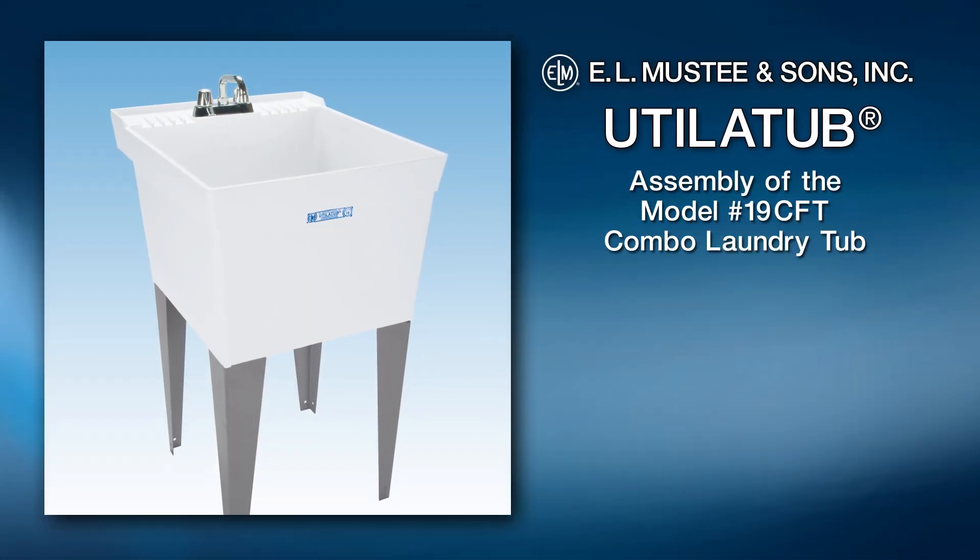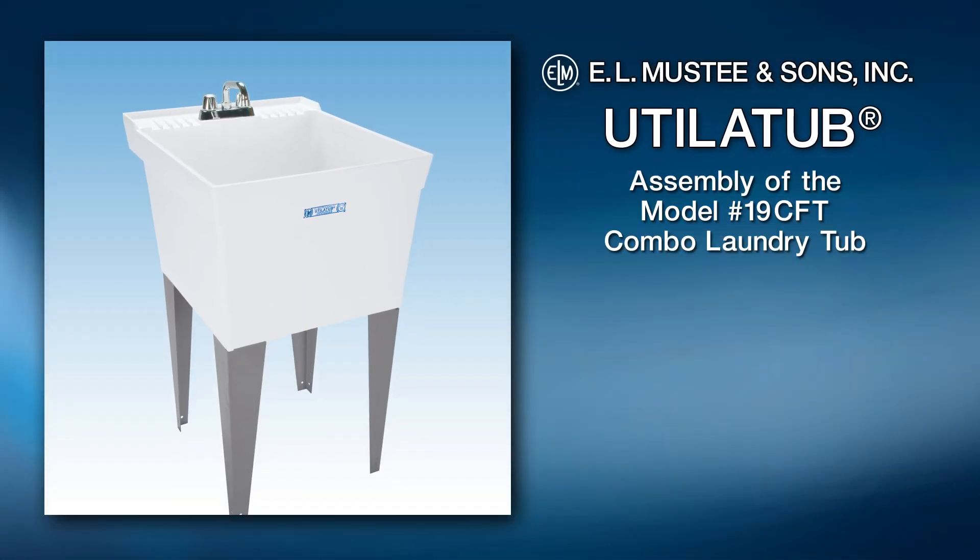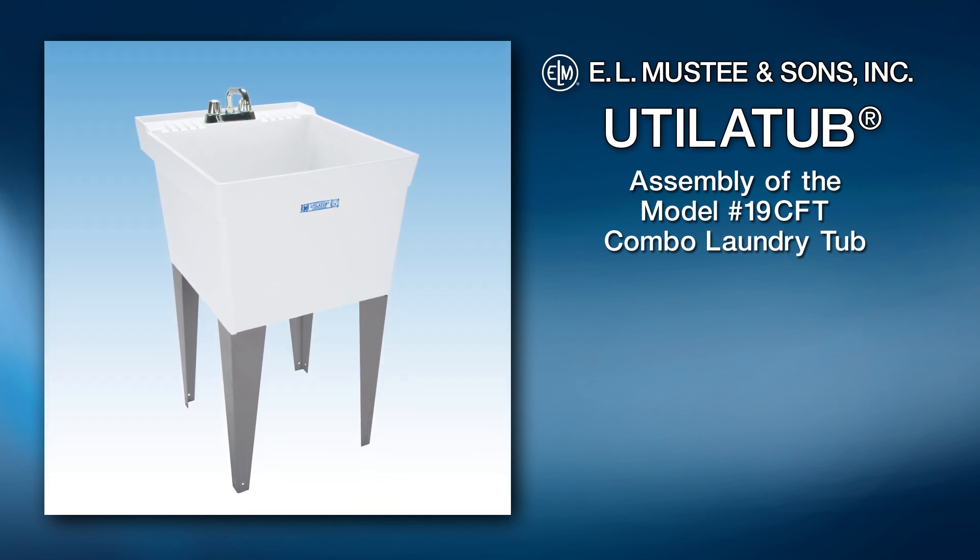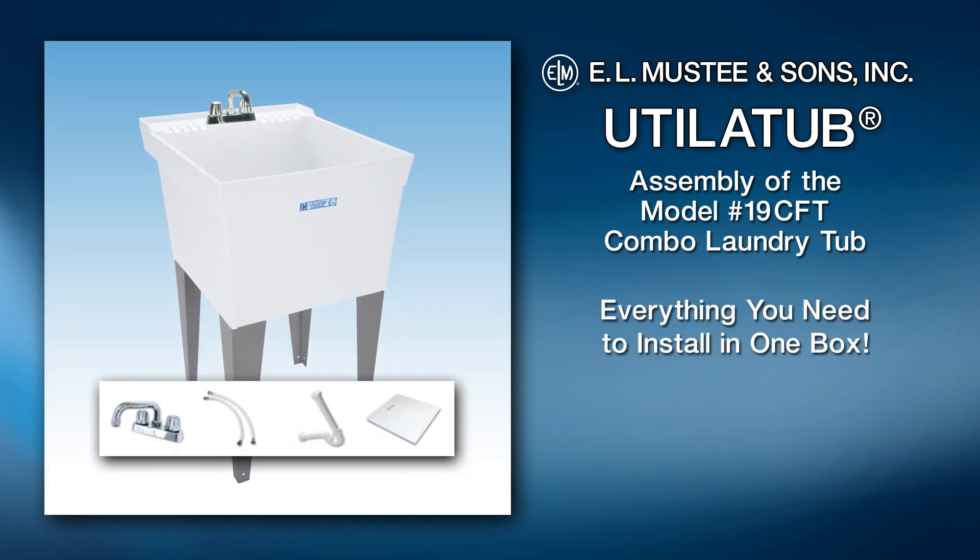In this video, we're assembling the Model 19CFT Utilitub Combo Laundry Tub. The model comes complete with the faucet, two supply lines, and P-trap and top cover.